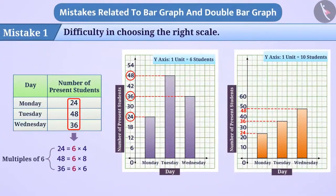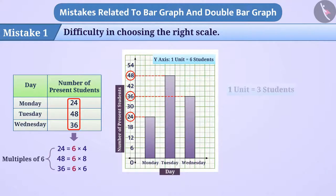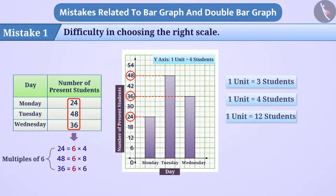Can you tell what scale can we take here instead of 1 unit is equal to 6 students? Think. We can also take this scale as 1 unit is equal to 3, 4, or 12 students.